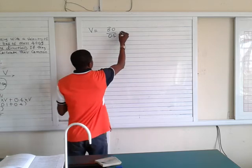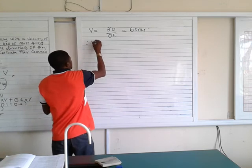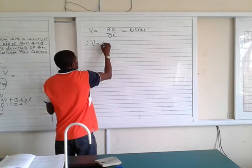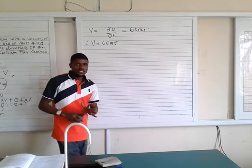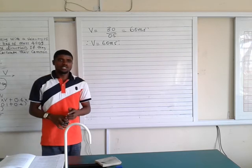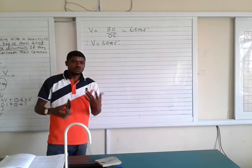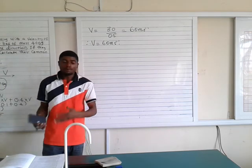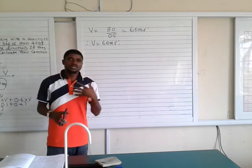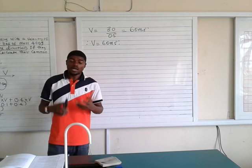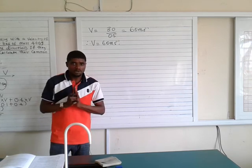That gives V equals 60 metres per second. Therefore their common velocity is 60 metres per second. Thank you for watching. In the next lesson I will be looking at collision types and the kinetic energy involved in collision before and after. Thank you and God bless.